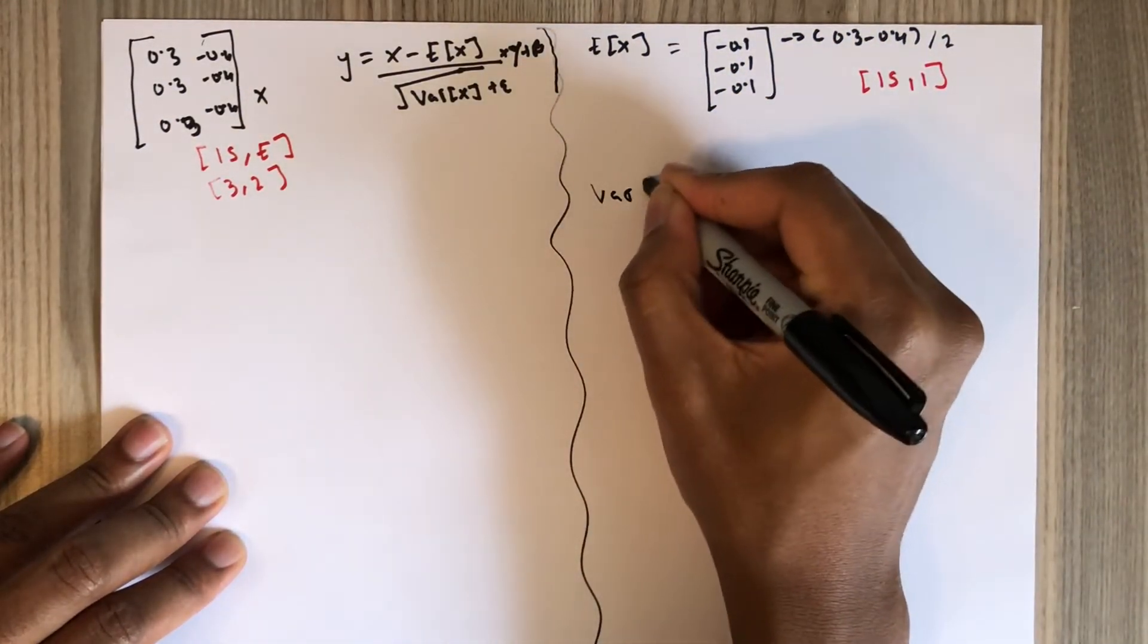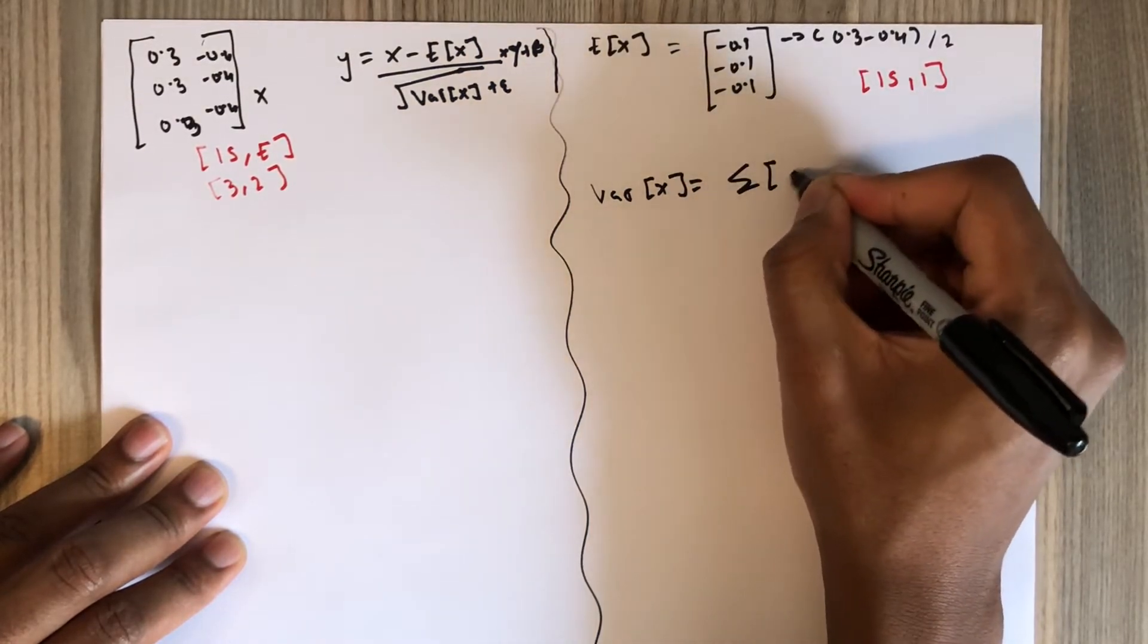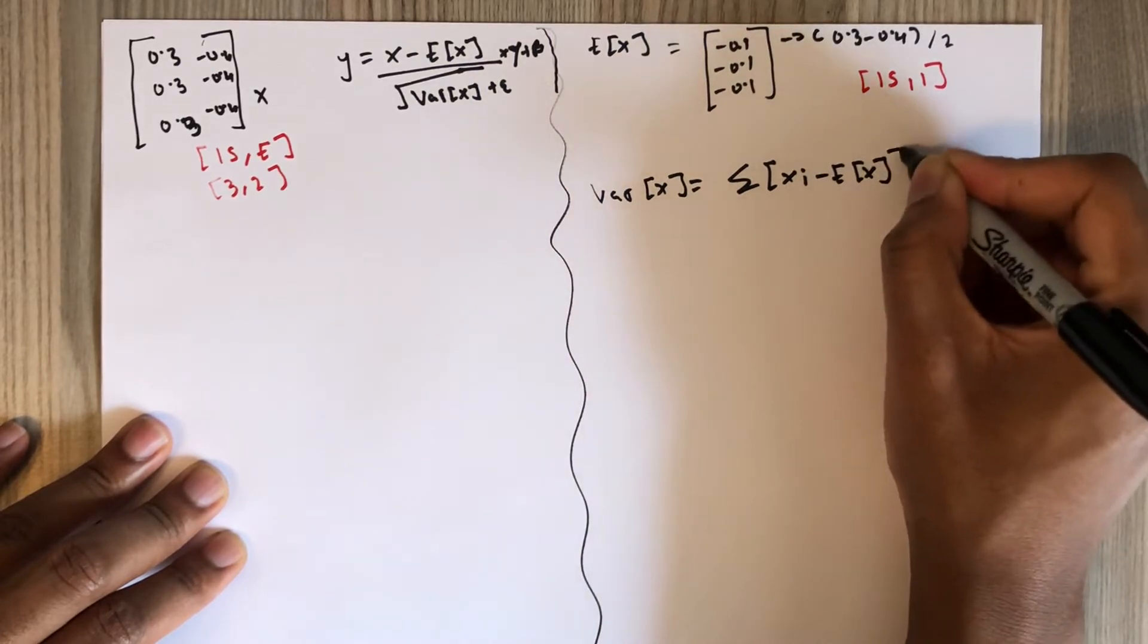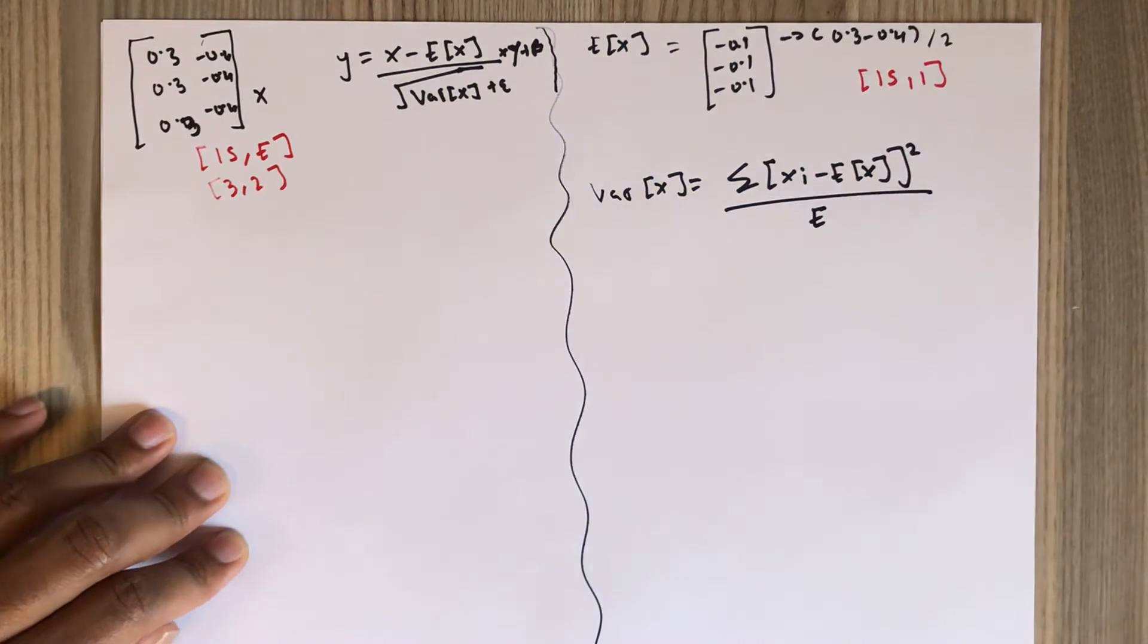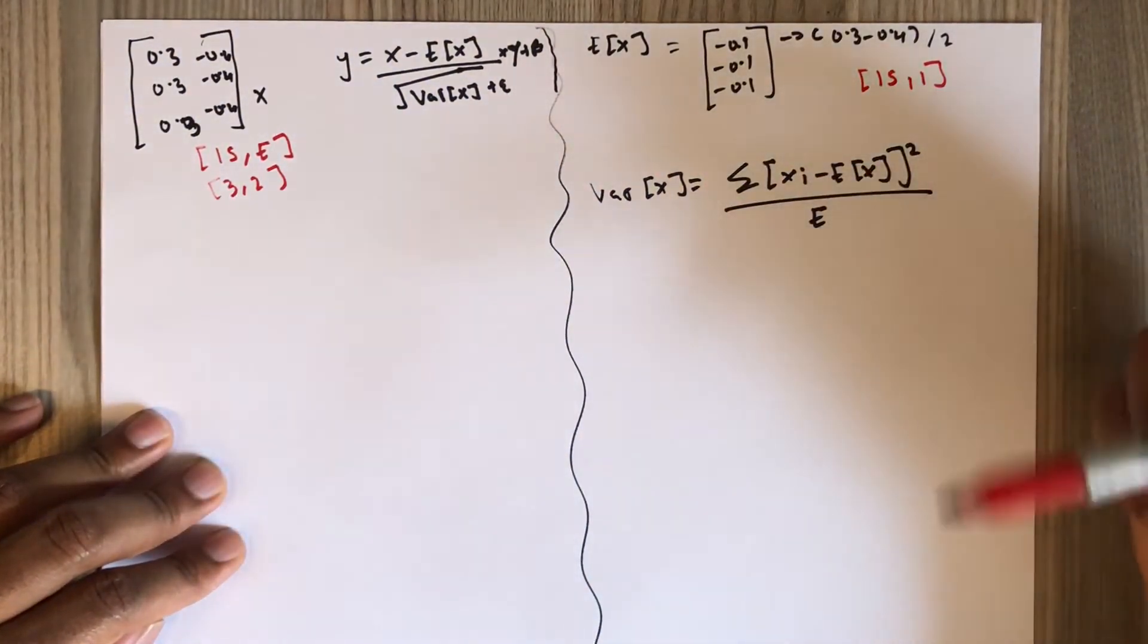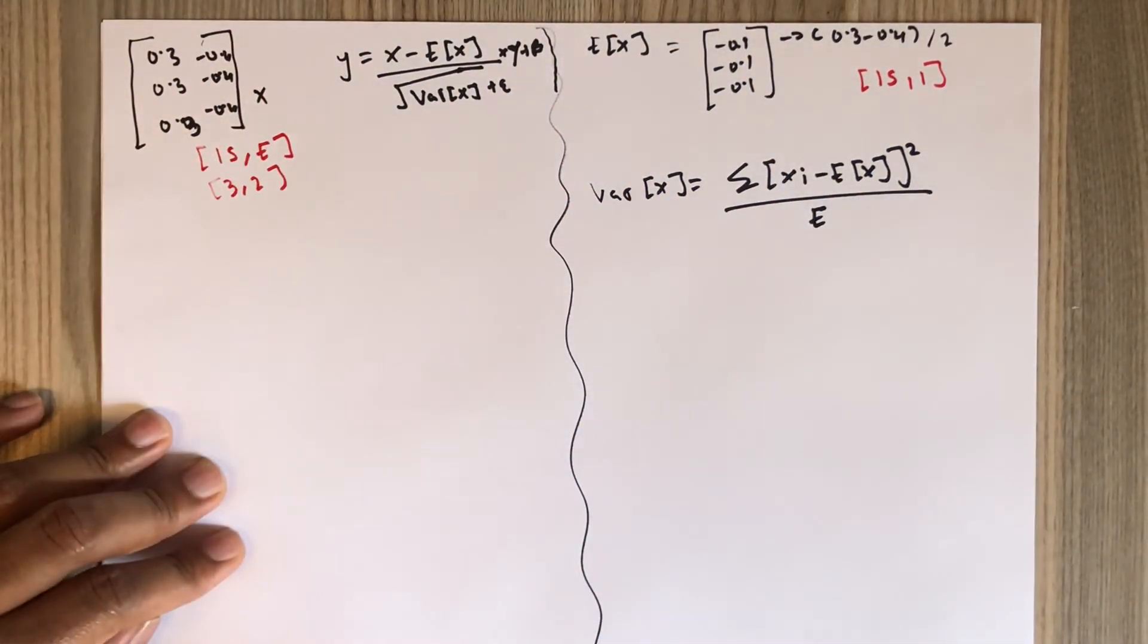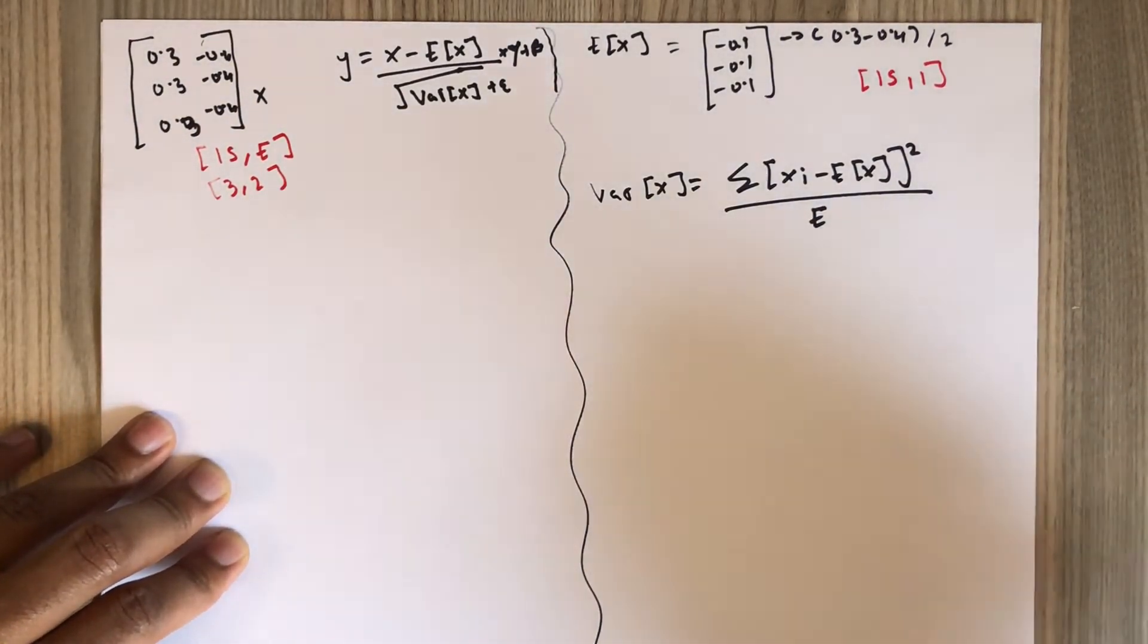Let's compute the variance of X. The formula for variance uses division by E. Typically in batch normalization and in typical variance formulas, you divide by IS or n (number of examples), but here you divide by the embedding dimension.